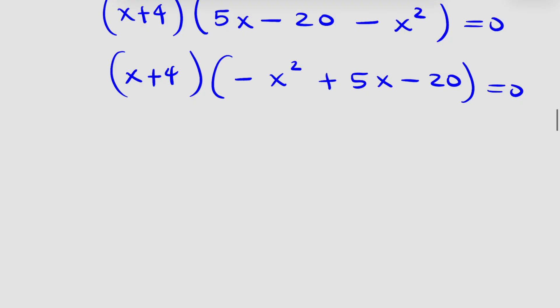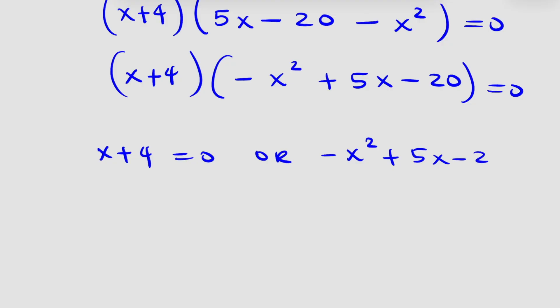So we say either x plus 4 is equal to 0, or negative x squared plus 5x minus 20 is equal to 0. From the first part, if we subtract 4 from both sides, x is negative 4.